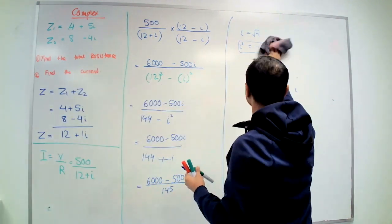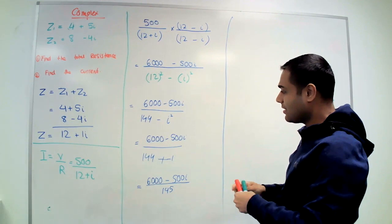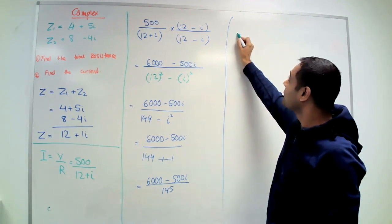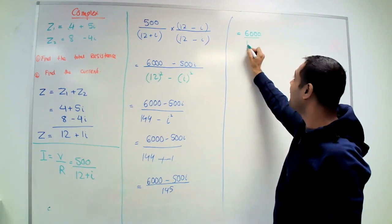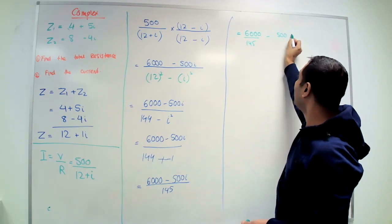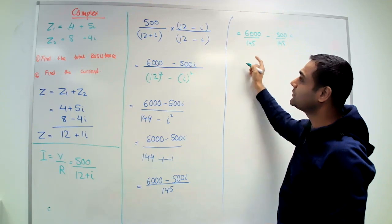After this, you can convert that one: 6000 divided by 145 minus 500i divided by 145. And you want the calculator to give me the answer please.